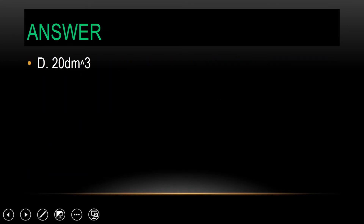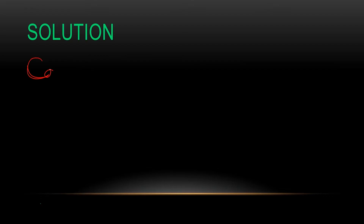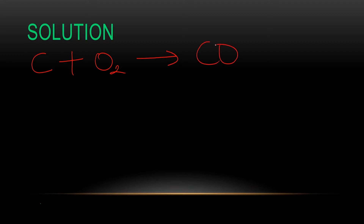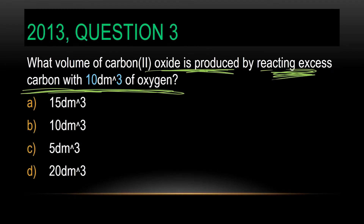Carbon reacts with oxygen to give me carbon monoxide. Now, let's balance it. This is 2. If we put 2 here, we've made oxygen 2, we've made carbon 2. So we'll put 2 here. So this is 2 is to 1 is to 2. Balanced.